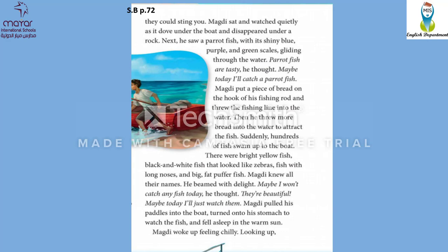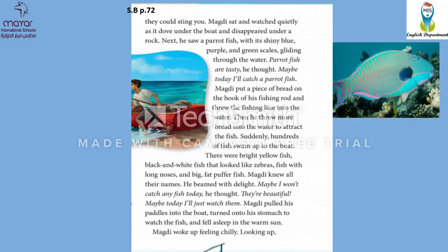Now I want you to open your student books, page 72. We were talking about the lionfish — that they were dangerous, they could sting you. Majdi sat and watched quietly as it dove under the boat and disappeared under the rock — he was afraid of the lionfish. Next, he saw a parrotfish with its shiny blue, purple, and green scales gliding through the water. Remember the word gliding? It means moving smoothly with no noise, no effort. So parrotfish are tasty, he thought. Maybe today I'll catch a parrotfish. Majdi put a piece of bread on the hook of his fishing rod and threw the fishing line into the water.